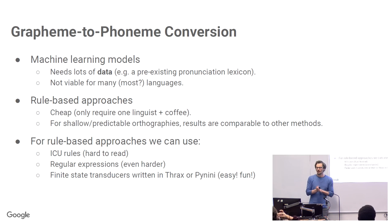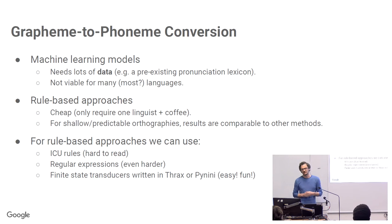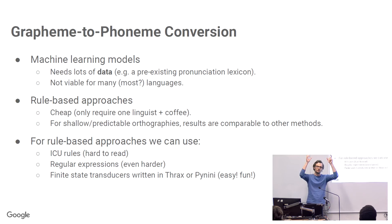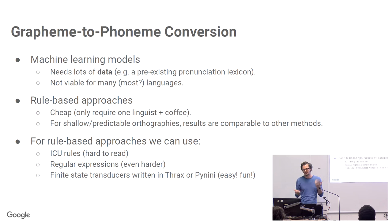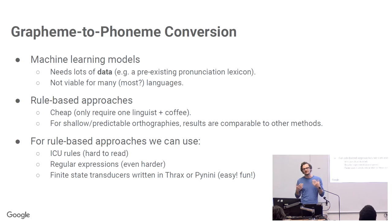For grapheme-to-phoneme conversion, there are various ways to do it. The most common is to use a machine learning model, for which you need lots of data — you basically already need a pre-existing pronunciation lexicon. If you have that, you can train a G2P model; it's a sequence-to-sequence problem. But in many situations we don't have that yet. It's not viable for most languages in the world — there are 7,000 languages, and Google ASR supports something like 120, which is less than 10% in terms of number of languages.